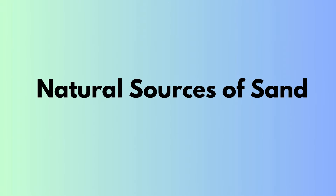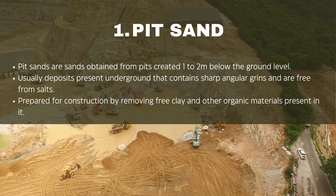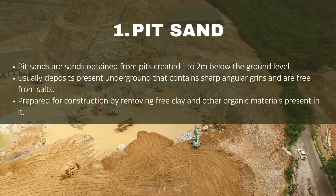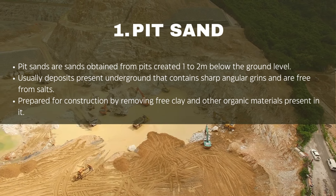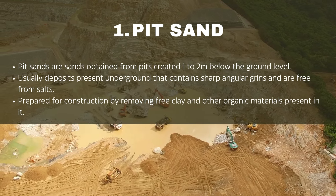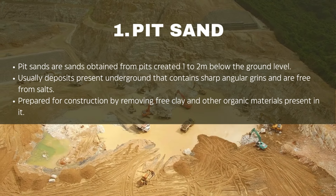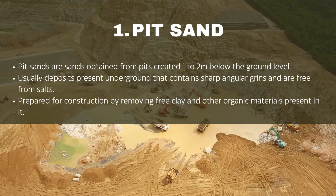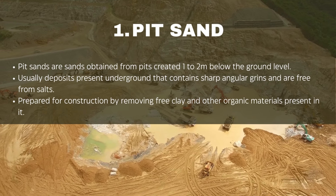The natural sources of sand are: 1. Pit Sand. Pit sands are sands obtained from pits created 1 to 2 meters below the ground level. These are usually deposits present underground that contain sharp angular grains and are free from salts. This sand is prepared for construction by removing free clay and other organic materials present in it.